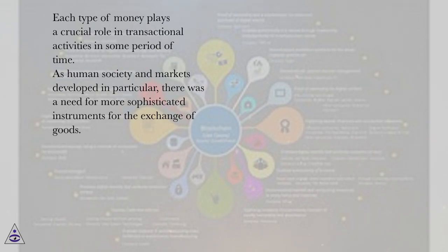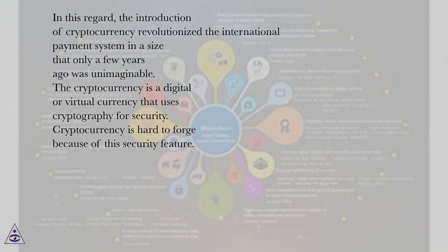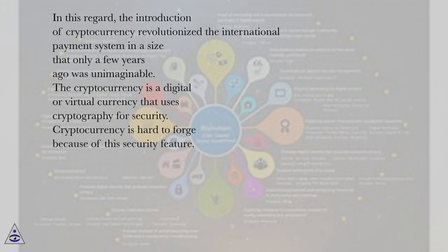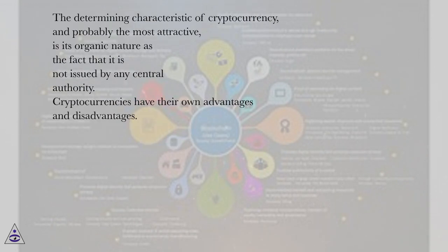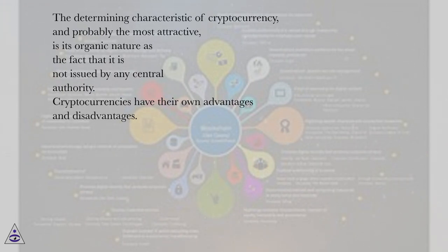As human society and markets developed, there was a need for more sophisticated instruments for the exchange of goods. In this regard, the introduction of cryptocurrency revolutionized the international payment system in a way that only a few years ago was unimaginable. Cryptocurrency is a digital or virtual currency that uses cryptography for security. Cryptocurrency is hard to forge because of this security feature. The determining characteristic of cryptocurrency, and probably the most attractive, is its organic nature — the fact that it is not issued by any central authority.